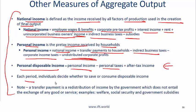Each period, individuals decide whether to save or consume disposable income. A transfer payment is a redistribution of income by the government which does not entail the exchange of any good or service. Examples are welfare and social security.